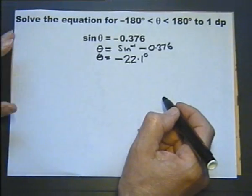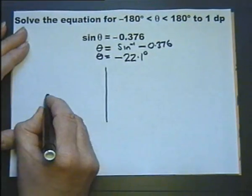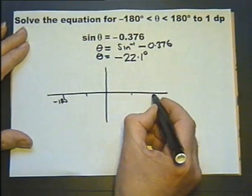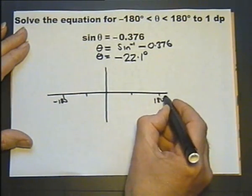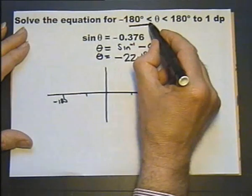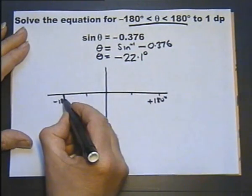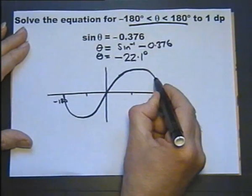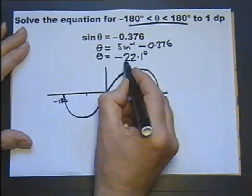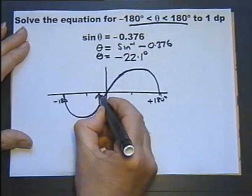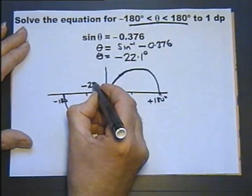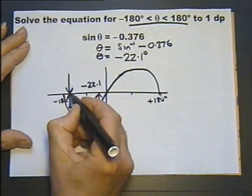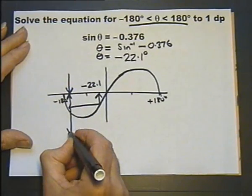So let's have a look at that on the graph. But this time our graph is going from minus 180 to plus 180, as in the range we've been asked to solve it for. So our sine graph actually looks like this, and then we carry on like that. Minus 22.1 is about there. Therefore, this angle here will have exactly the same value. So let's think about that.